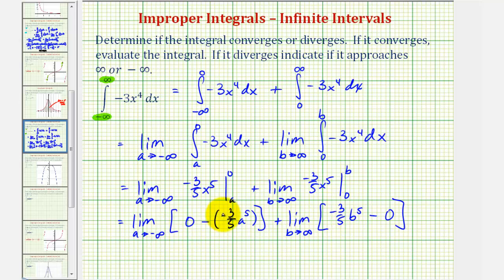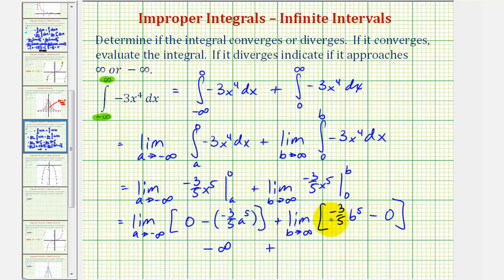Now we'll evaluate the limits. Here we have minus a negative, which becomes plus a positive. But a is approaching negative infinity raised to the fifth power, so it remains negative — therefore this first limit is approaching negative infinity. For the second limit, as b approaches positive infinity, we have negative three-fifths times a value approaching positive infinity to the fifth, which is positive — and negative times a positive is negative, so the second limit is also approaching negative infinity.